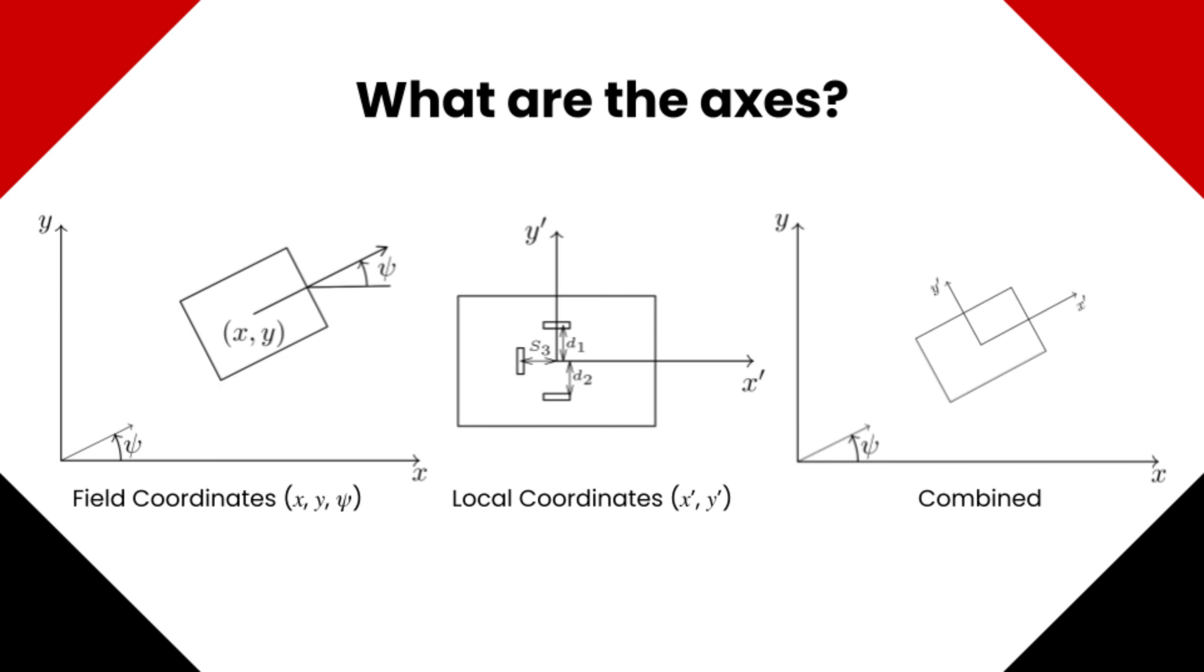For the parameters of the robot, label the distances from the odometry pods to the center. The x' coordinate system is positioned stationary such that the x' direction is the front of the robot and the y' is the left of the robot.